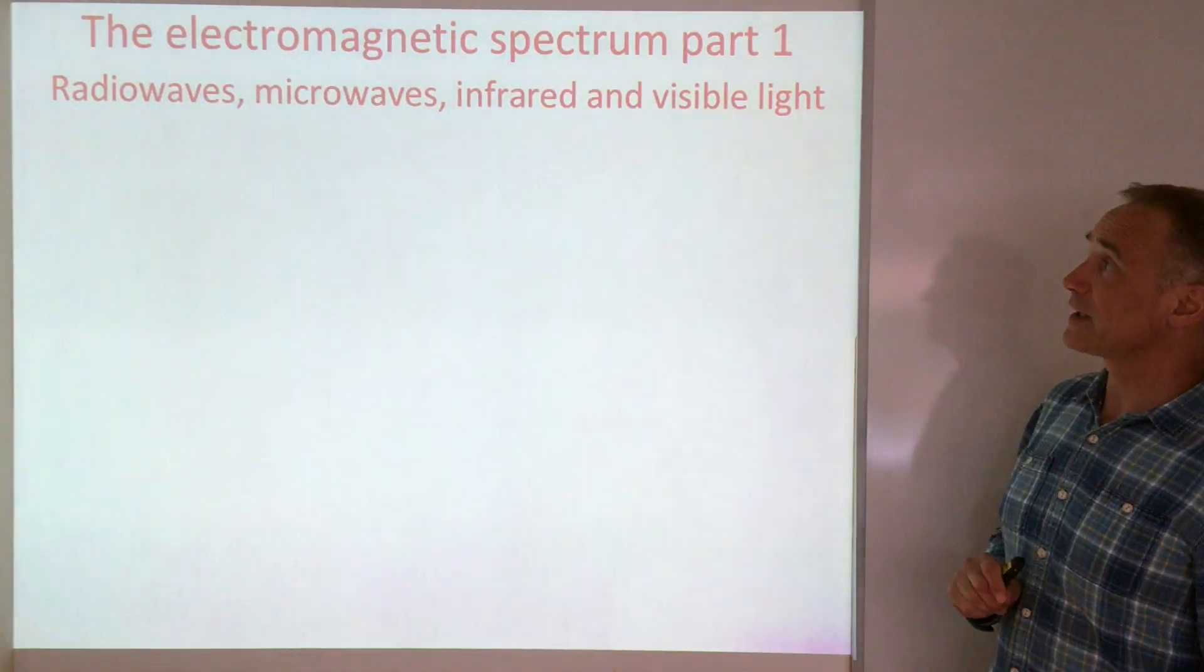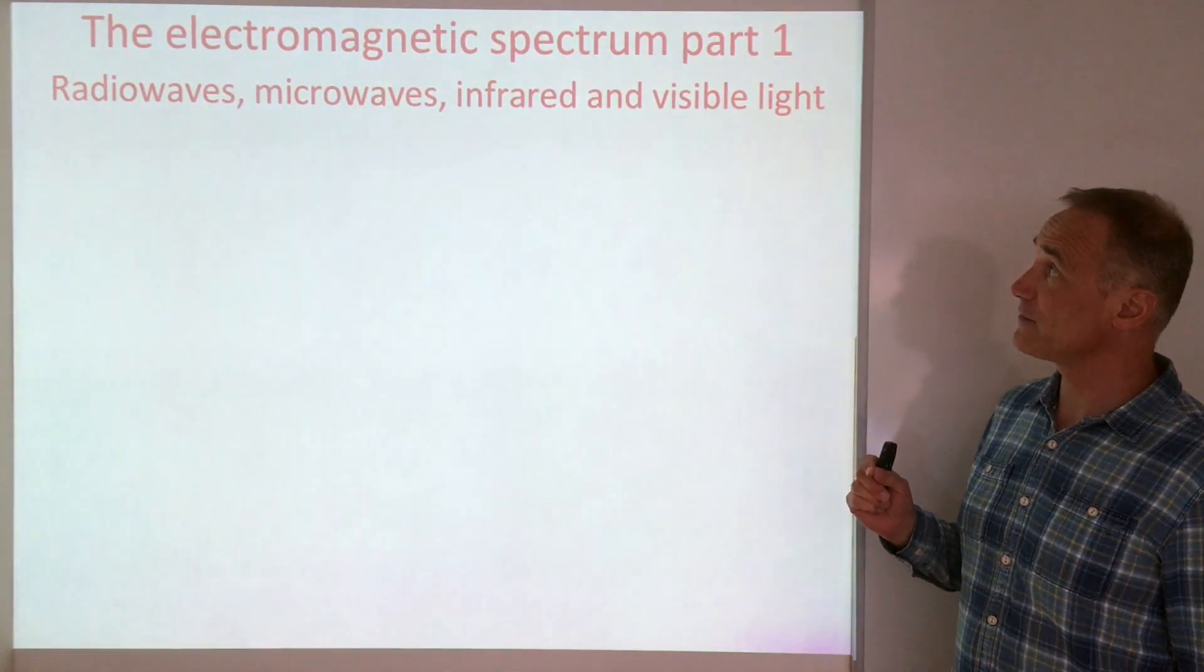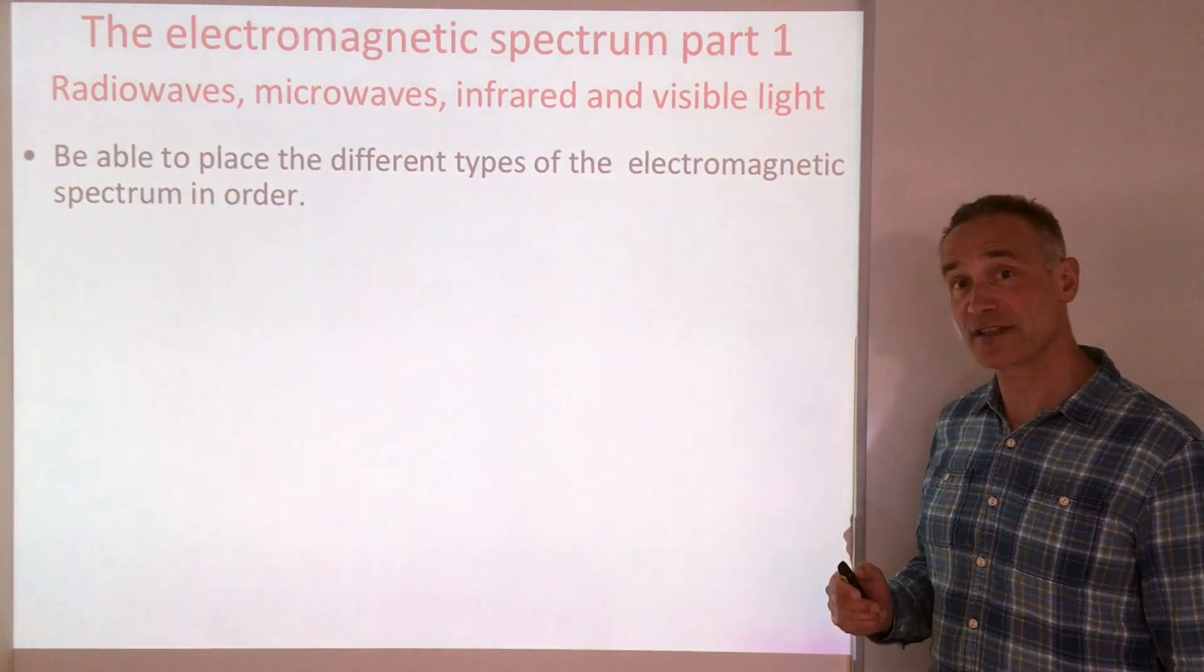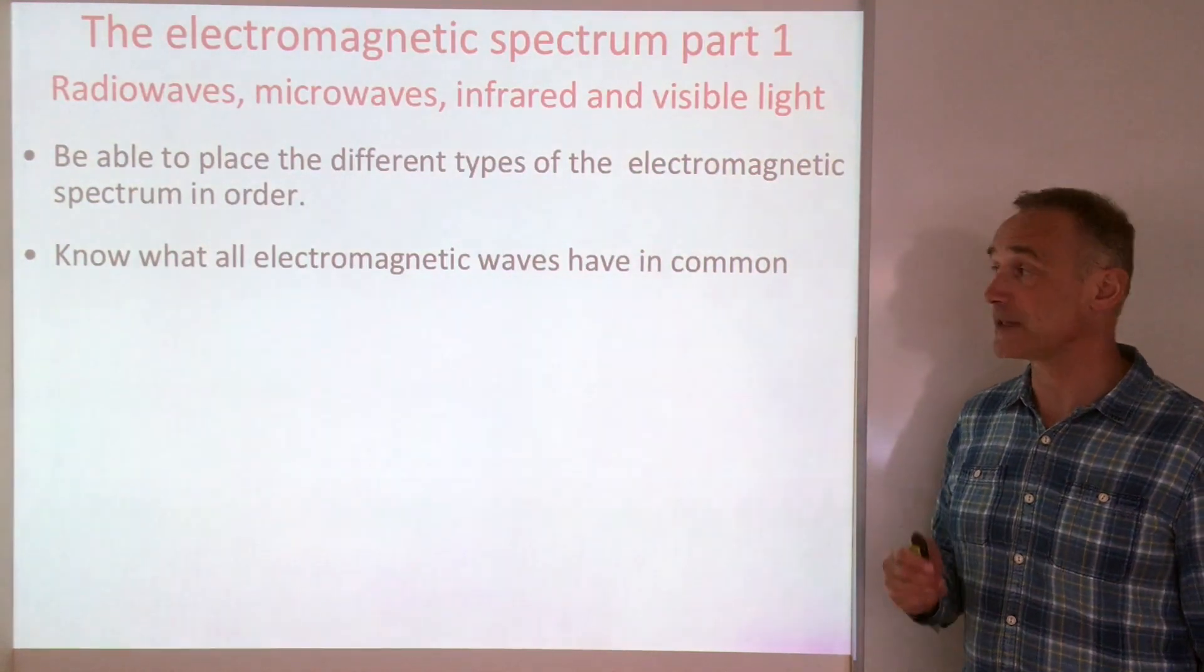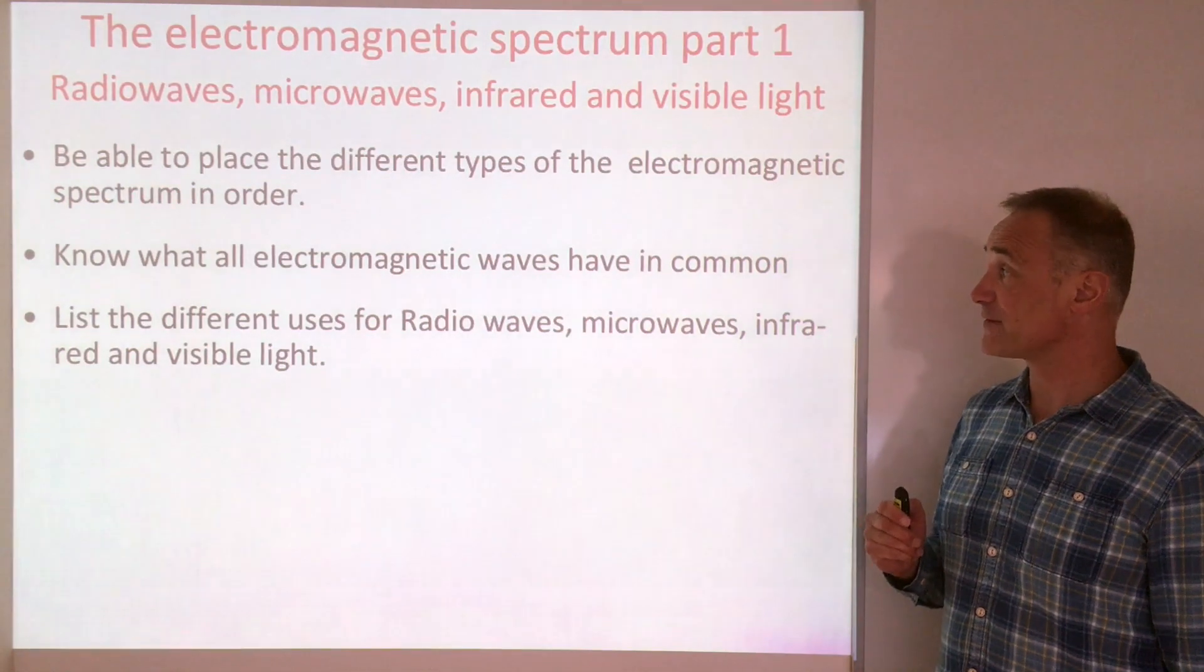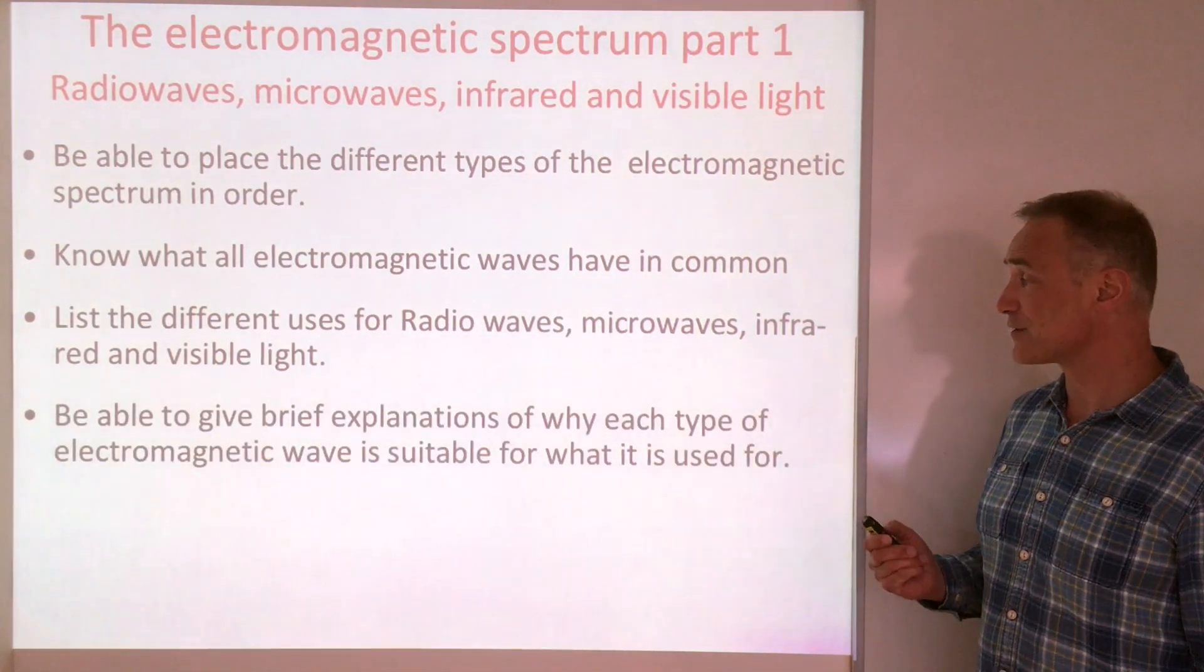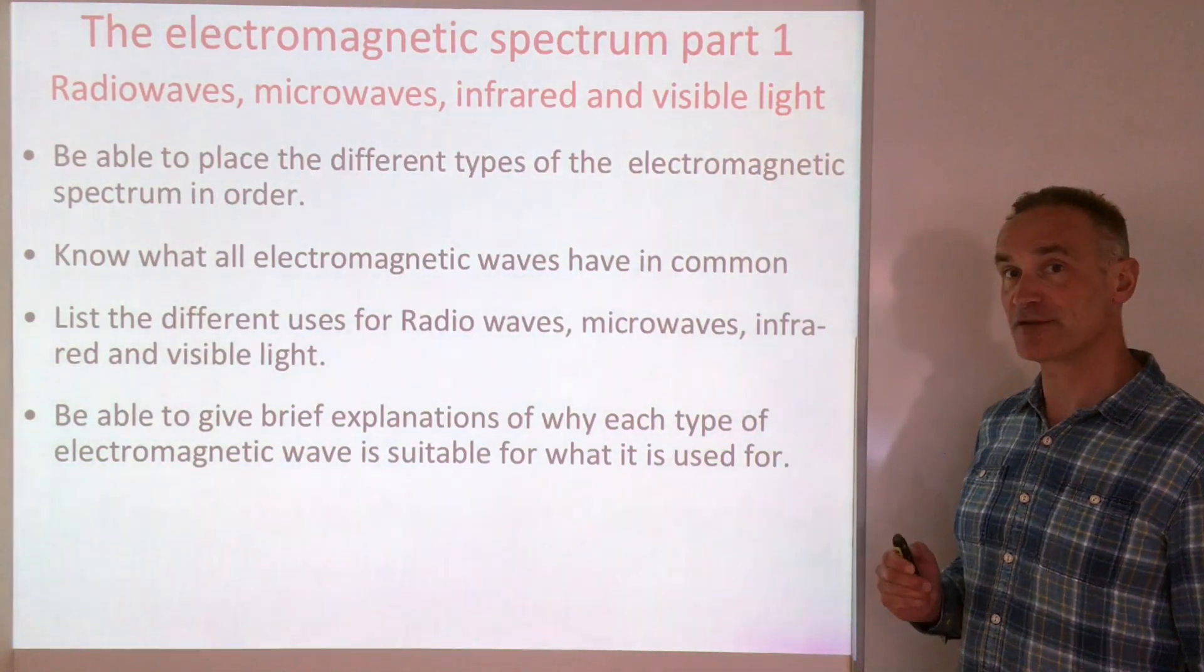In this video, we're going to be looking at four parts of the electromagnetic spectrum: radio waves, microwaves, infrared, and visible light. You'll be able to place the different types of electromagnetic radiation in order, know what electromagnetic waves have in common, list different uses for radio waves, microwaves, infrared, and visible light, and give brief explanations of why each type of electromagnetic wave is suitable for what it's used for.